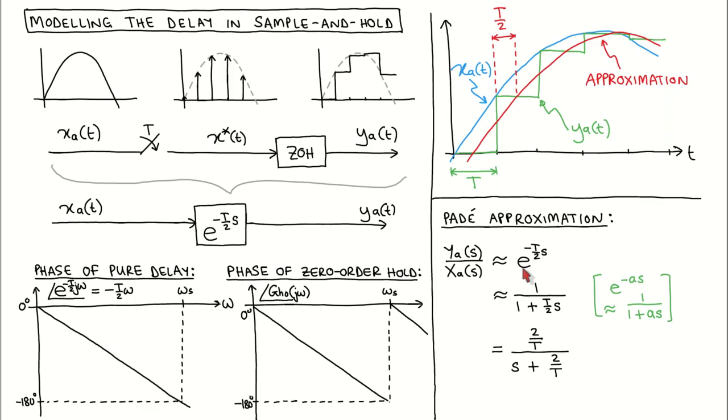For this module, we choose one of the simplest versions, where we approximate e to the power minus a s as 1 divided by the polynomial 1 plus a s. When we apply this to our half-sampling period delay transfer function, we get this transfer function.